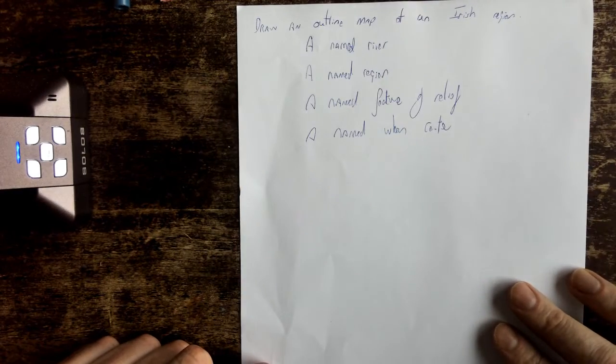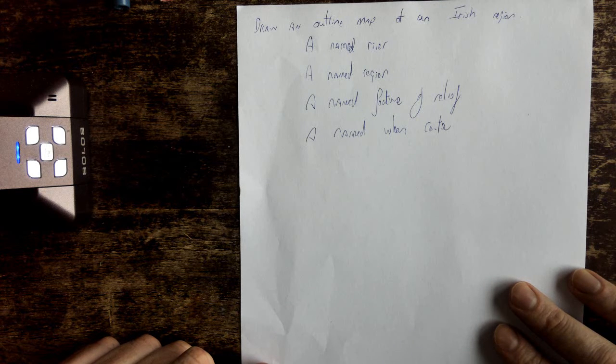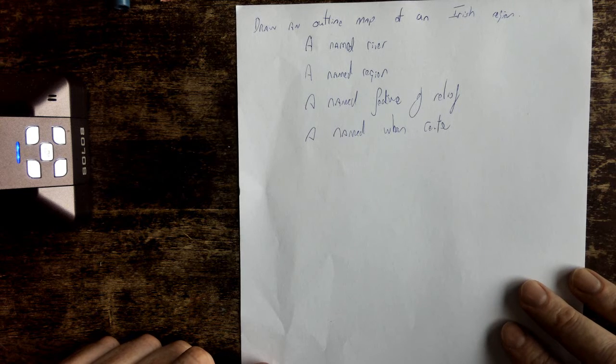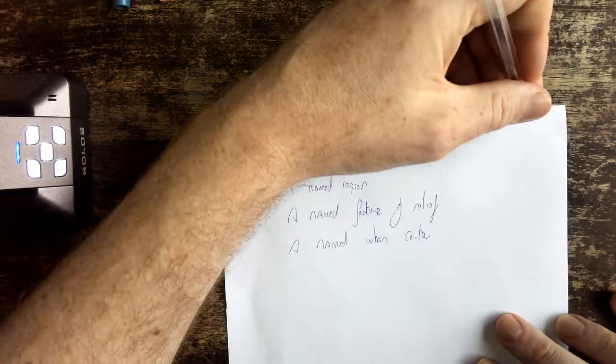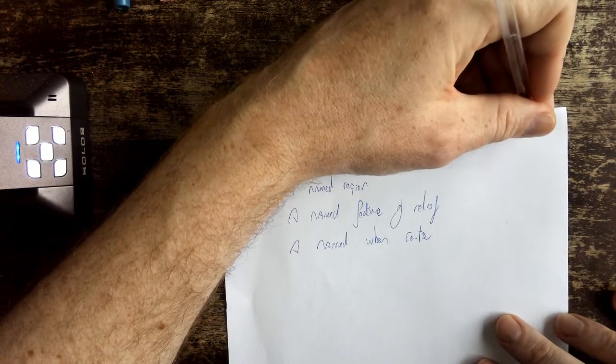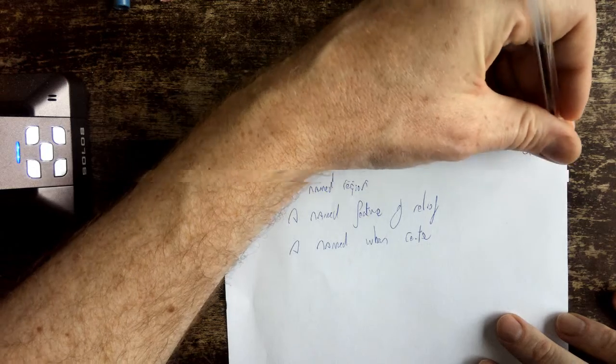If you are asked to draw an outline map of an Irish region, a named region, a named river and a named feature of relief and a named urban centre, that's a typical leaving cert question and that was the question in 2022 question 4a.